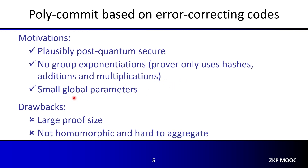The size of global parameters is very small and there is no trusted setup. All we need to do is sample a hash from a family of hash functions, and the size is constant. But these nice properties come at a cost. The first drawback is that these schemes usually have a very large proof size — we are talking about several megabytes to tens of megabytes in practice. Another drawback is that because of the lack of algebraic structure, these proofs do not have the homomorphic property and are hard to aggregate in a similar way as KZG polynomial commitments to support multiple evaluations.